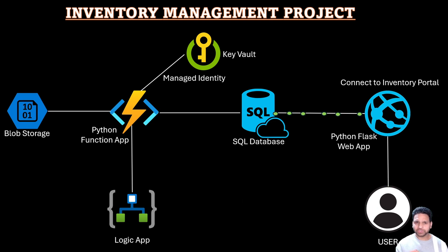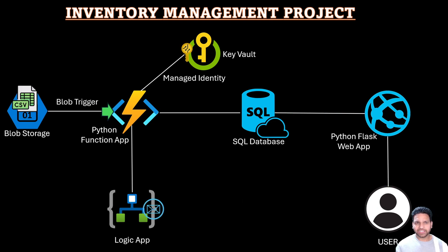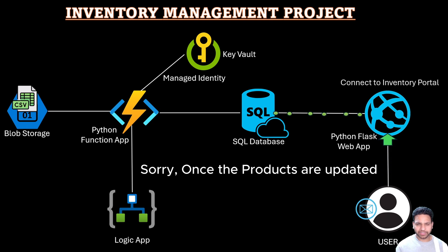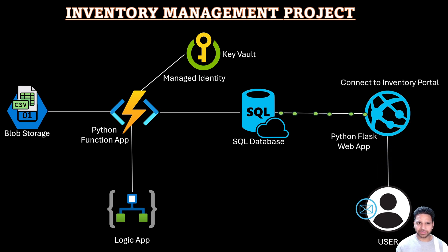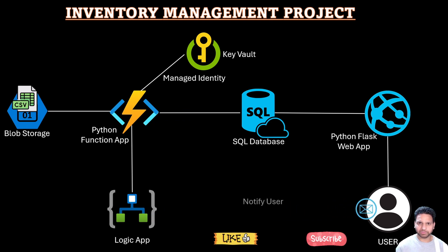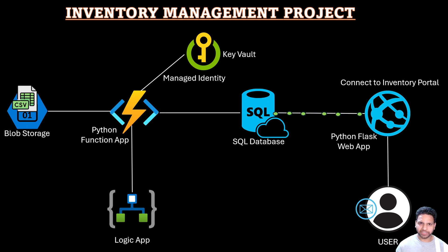So let's start with the purpose of this project. As the name suggests, the inventory management project is used for managing the inventory of products. Once the inventory is updated, a CSV file will be created, and using that CSV file, we have to update our inventory portal where users can check all the product details or even search for a specific product. Along with that, users should be notified that the inventory has been updated.